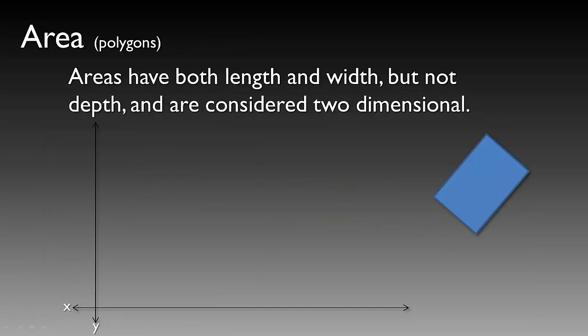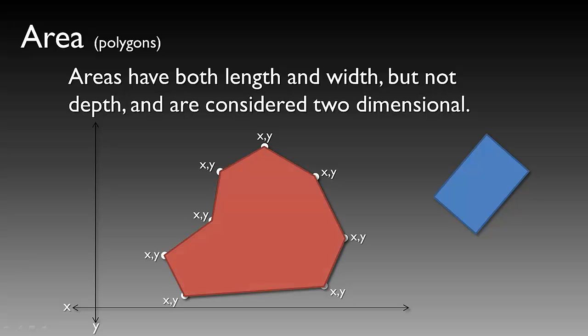Areas have both length and width, but they do not have depth, and they're considered two-dimensional. We're building up on the complexity of a point: a line feature class is a number of points connected by a line or arc. A polygon is the same idea, however the first and last point are connected by closing of an arc, so you have a full area you can calculate within the closed confines of those arcs.